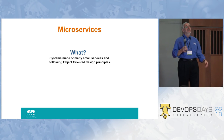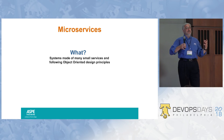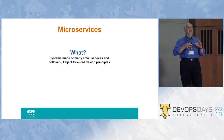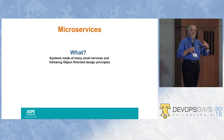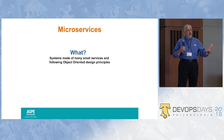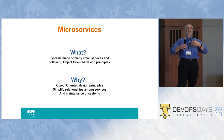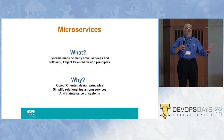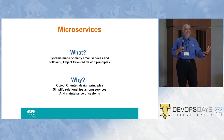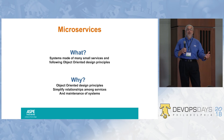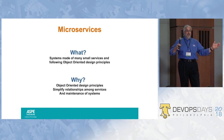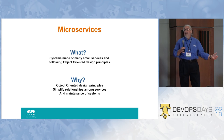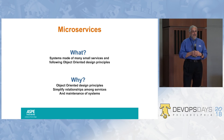So the what of microservices: they are systems built of many, many small services designed around object-oriented design principles. And the reason why is because that gives us tremendous flexibility in how we maintain things, and indeed allows us to apply DevOps principles and actually make it work on a huge scale. That's the what and the why.